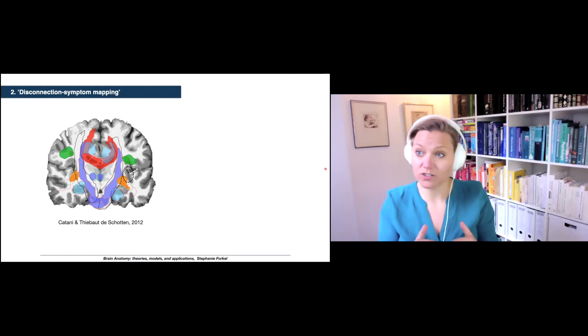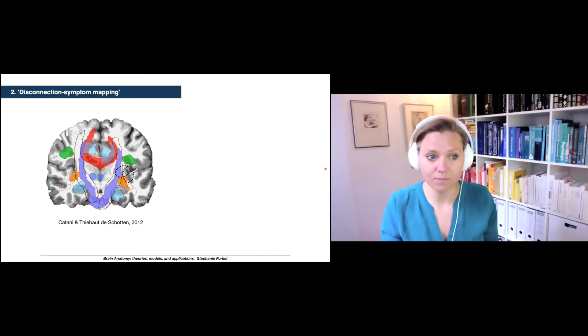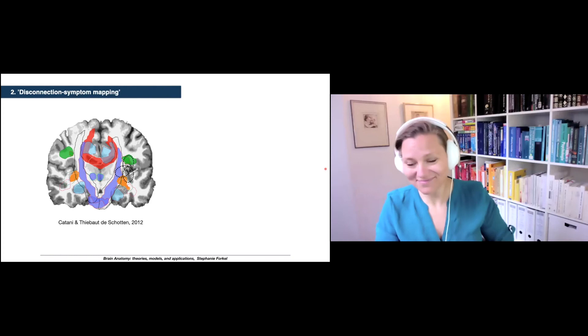If we have a lesion there, if that lesion extends ventrally it will impact on the optic radiation, that's the orange fiber tract that you can see here, and that would lead to symptoms like hemianopia or visual agnosia. If, however, that lesion extends more medially, it will then impact on the corticospinal tract and most likely cause a hemiparesis or somatosensory deficits. If we extend dorsally, that lesion now impacts the arcuate fasciculus so we would expect to see language deficits in those patients.